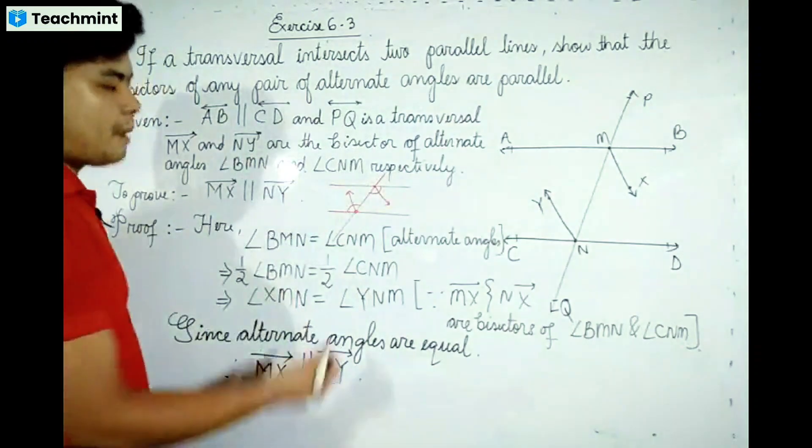Now see what they say. Exercise 6.3, question number 4. If a transversal intersects two parallel lines, show that the bisectors of any pair of alternate angles are parallel. Given: AB and CD are parallel lines. A transversal PQ intersects AB at M and CD at N. Alternate angles are angle BMN and angle CNM.